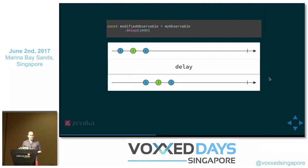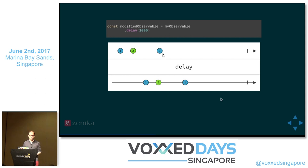You also have operators that can manipulate time, not just use it. The first is the delay operator, which is very intuitive: the events on the result observable happen after a one-second period versus the source observable. This makes it very easy to implement features like a cancellation delay. For example, if the source observable is an action made by the user — like clicking on a button — and the result observable triggers a network request, you can use the delay operator to give the user a window to cancel their action.